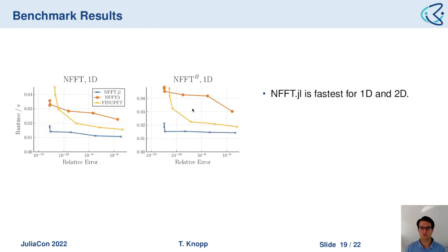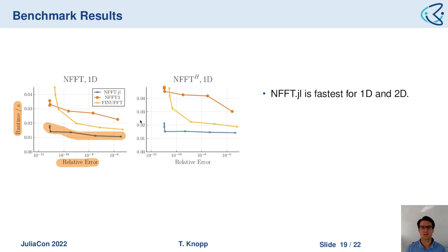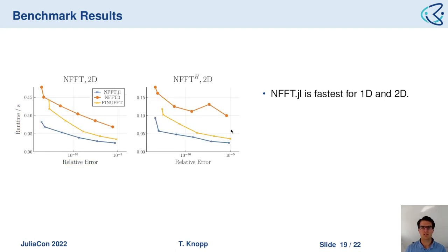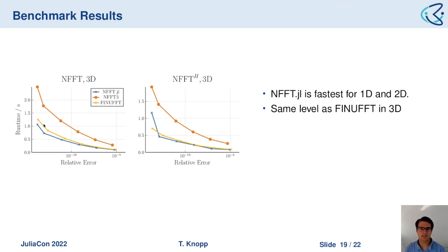In these results, the x-axis shows relative error at different accuracy settings, and the y-axis shows runtime — lower is better. In 1D, NFFT.jl is now the fastest library compared to its competitors, both for the direct and adjoint transforms. In 2D this also holds true.